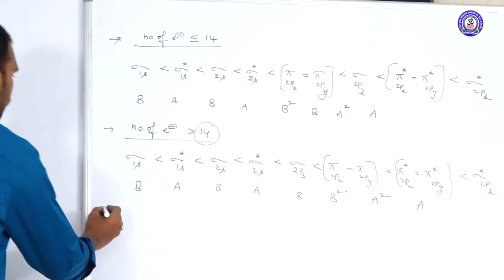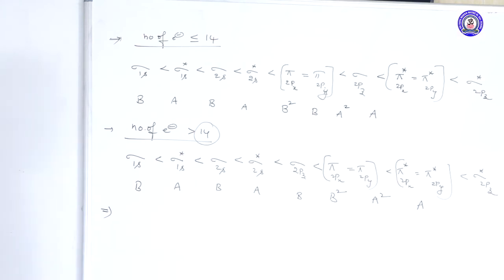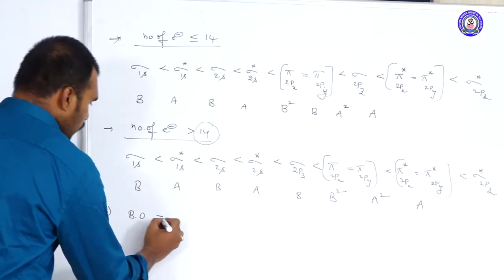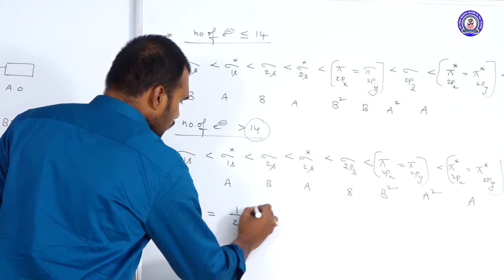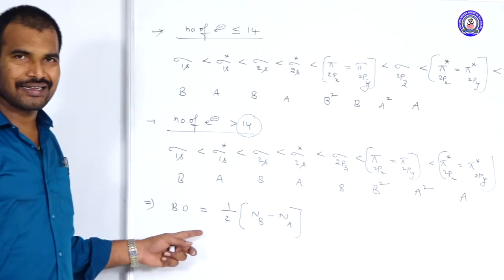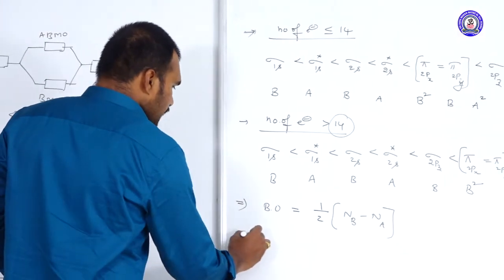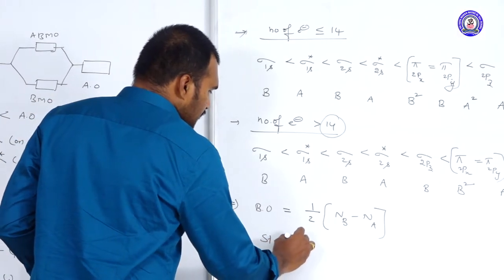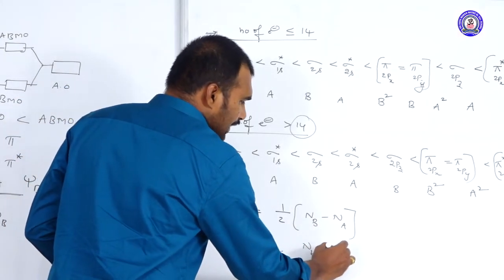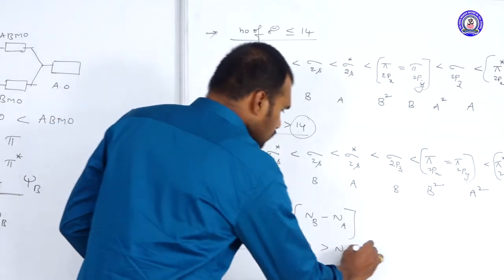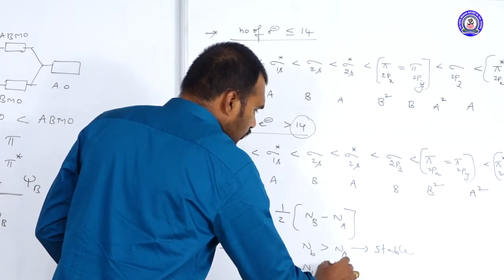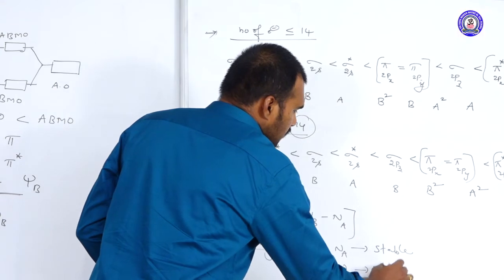To calculate bond order, the formula is: Bond Order = ½ × (number of bonding electrons − number of anti-bonding electrons). Using this formula you can calculate the bond order. For stability: if the number of bonding electrons is greater than or equal to the number of anti-bonding electrons, the molecule is stable. If bonding electrons are less than anti-bonding electrons, the molecule is unstable.